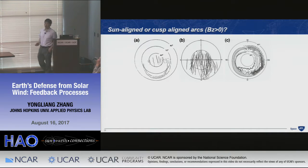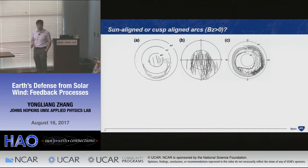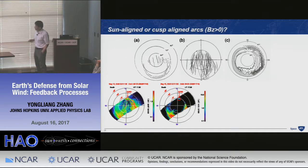Polar cap arcs have been observed probably for centuries. Ground observations show sun-aligned arcs in the polar cap. A long-standing controversy remains unresolved: one group argues these arcs are on open field lines, another says they should be on closed field lines. FUV observations may provide new information on whether they are really sun-aligned.